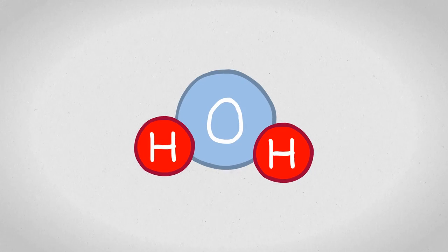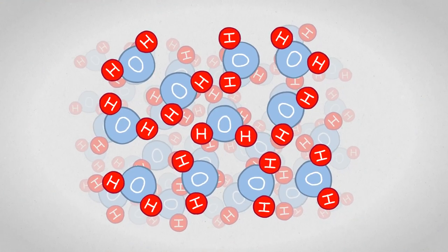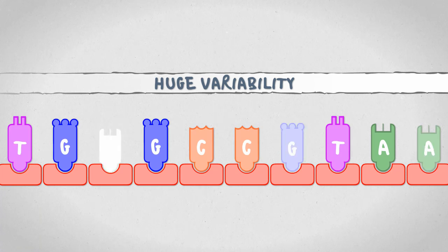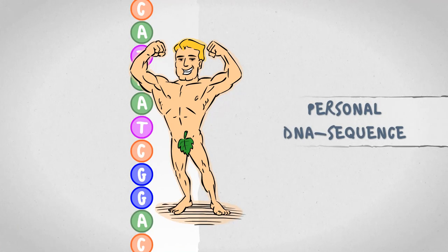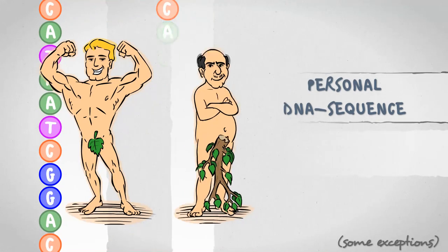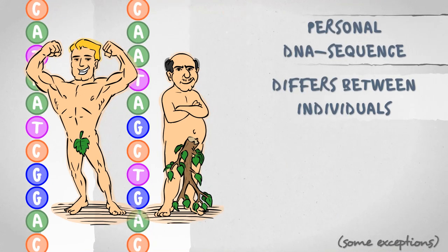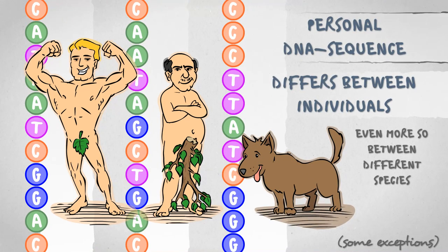Unlike water molecules, which are all the same, DNA can have countless variations depending on the order of letters in the chain. The sequence is specific to the individual, it is the same in every cell of the body but differs from the DNA sequence of other individuals. The difference is even greater between different species.